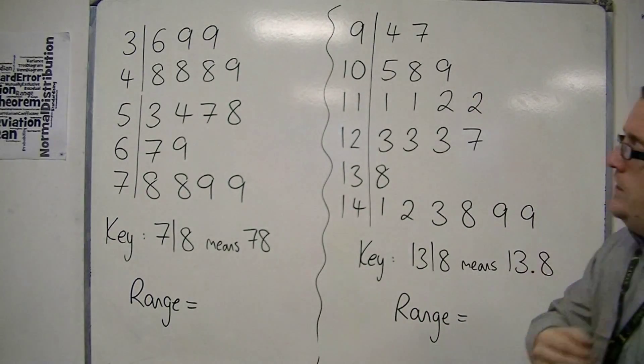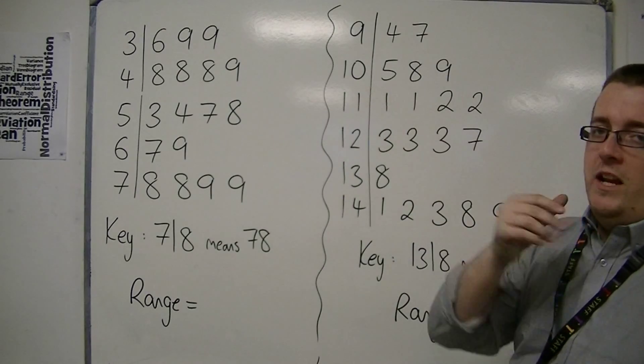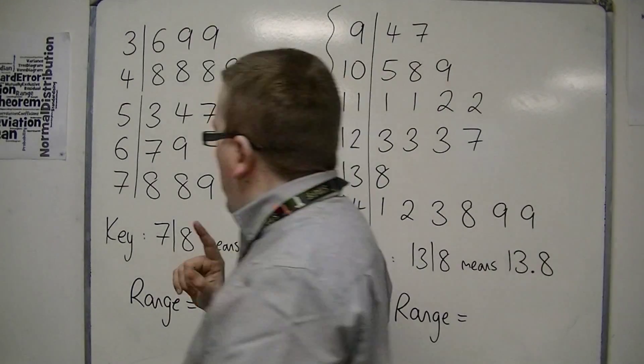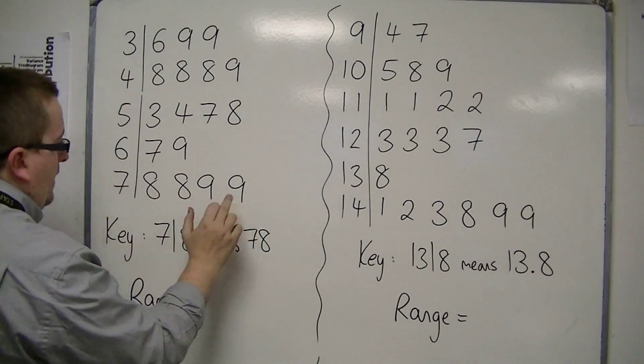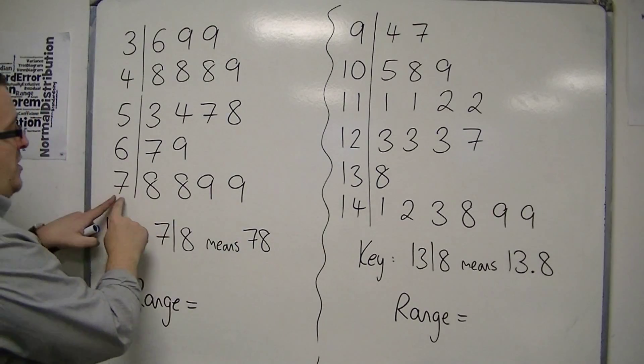So we need to find the largest number from this example and take away the smallest. So the largest number is actually the last one in the list, which is 79.